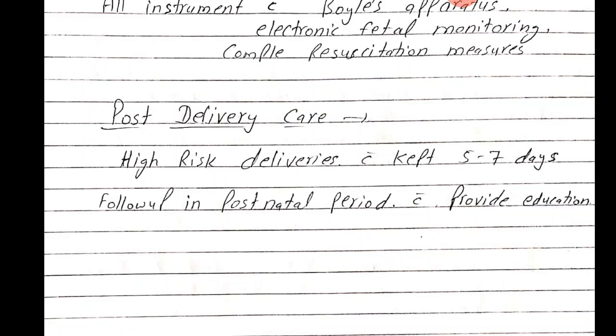So we have seen primary, secondary and tertiary care levels. Essential obstetrical care at primary level, then second referral centers which handle more high risk cases — how to provide care: antenatal care, intra-natal care, postnatal care, and neonatal care. We have seen all this.